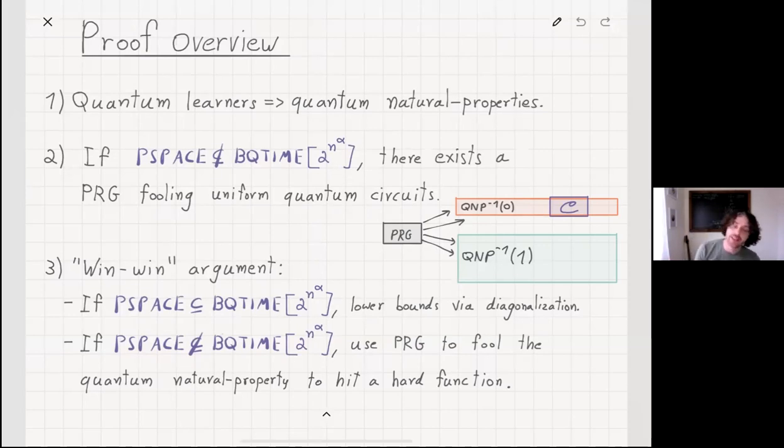If not, then it means that we can actually use, then we know that we can use our pseudorandom generator to fool the natural property to hit a hard function. That will conclude the proof overview.